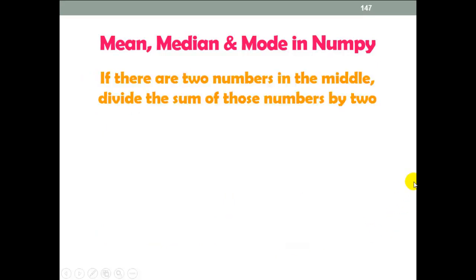Now what if there are 2 numbers in the middle? Please remember, divide the sum of those numbers by 2. So now here just I have added 31 on the previous sequence. So here total values are 12.